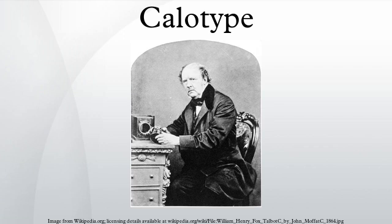The much longer exposure required — so daunting when capturing the dim image formed in a camera — was at worst a minor inconvenience when making a contact print by sunlight. Calotype negatives were often impregnated with wax to improve their transparency and make the grain of the paper less conspicuous in the prints.